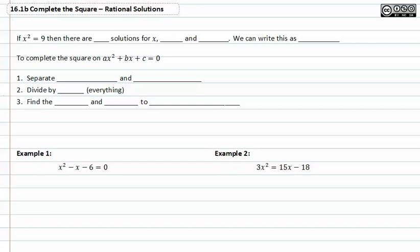In this video, we'll learn how to complete the square. With completing the square, it's important to remember that if x squared equals nine, then there are two solutions for x. There's three, so if x is three it would be x times x, which is nine, and the option of negative three as well, because if we square negative three we get nine as well. We can write this as plus or minus three.